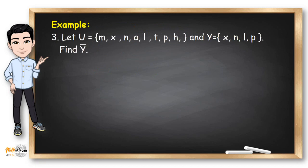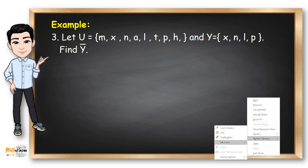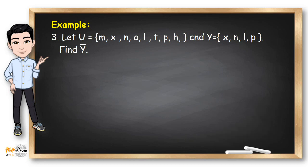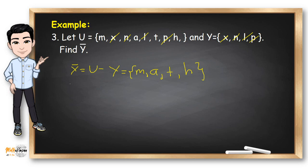Okay, number 3. Let U be a set and Y be the set containing X, N, L, and P. We need to find the complement of Y. The complement of Y is just like subtracting set Y from the universal set U. So I remove X, N, L, and P from set U. What remains in U? The remaining elements are M, A, T, and H. This is now the complement set.